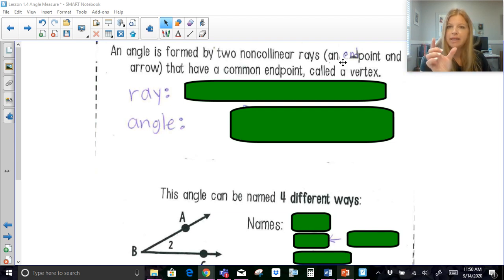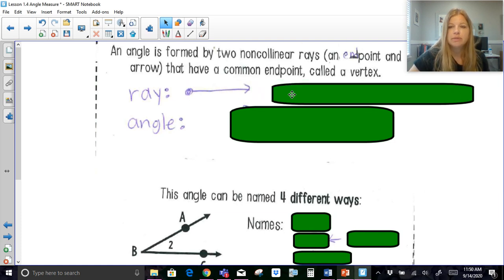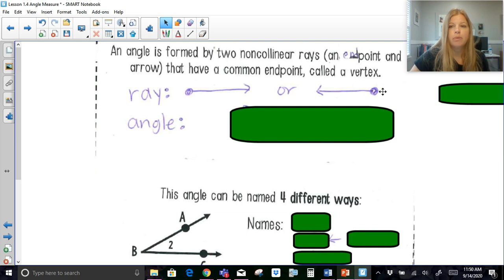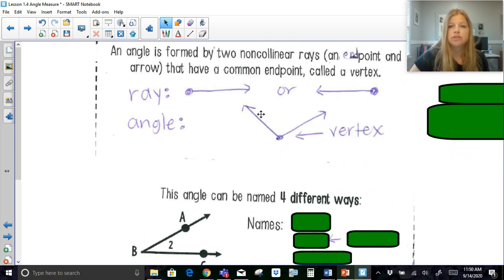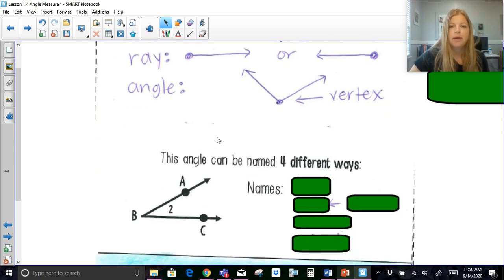So a ray is not a line segment. Remember, a segment has two endpoints. A line has two arrows, but a ray has one of each, an endpoint and an arrow. And an angle has a common endpoint called a vertex. So where those two rays intersect each other is that vertex. So this is what a ray looks like, or it can be the opposite direction, it does not matter. And then an angle is constructed out of two of those rays, and where they meet is called the vertex.